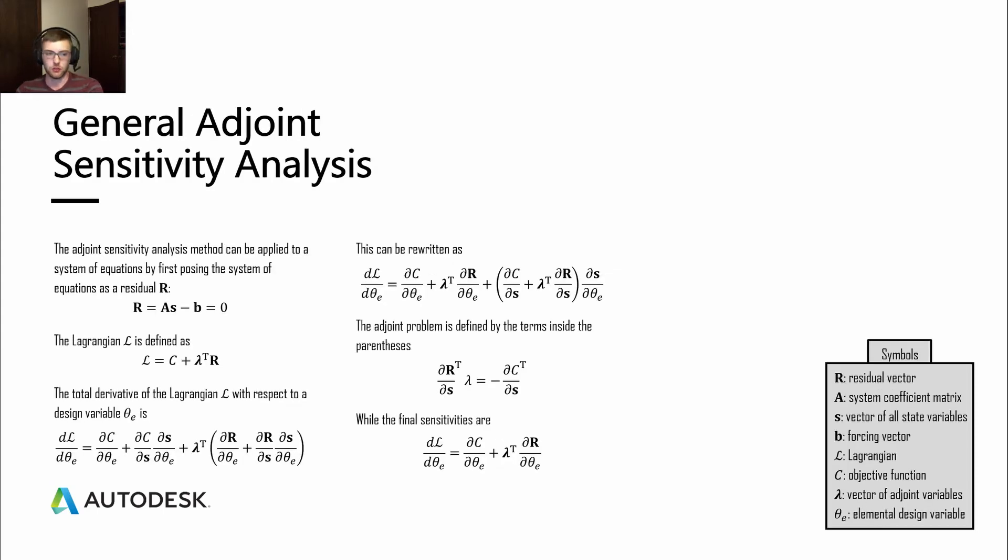Before we apply that to an example problem though, I want to go over this general adjoint sensitivity analysis. This is very useful for multi-physics. You can use it for a wide range of MPTO problems, whether they're coupled or uncoupled strongly or weakly. This formulaic method can be applied.